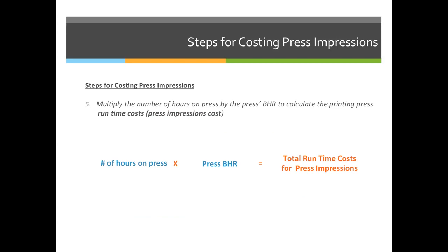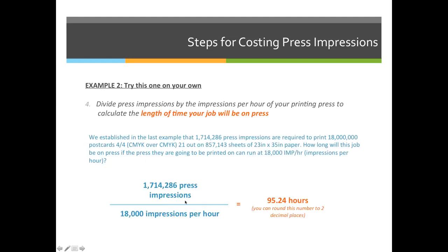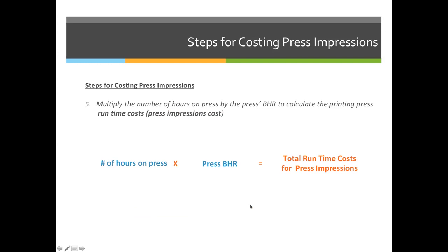Our fifth and final step is to calculate the cost of the press, since that's the overall thing we're trying to do. We will multiply the number of hours on press by the press's BHR, or budgeted hourly rate, to calculate the printing press runtime cost. Make sure you write this formula down for your cheat sheet: number of hours on press times the BHR.